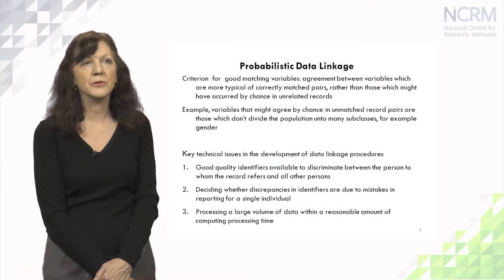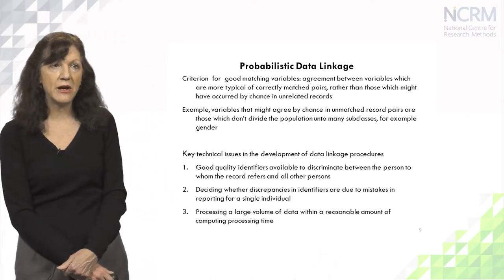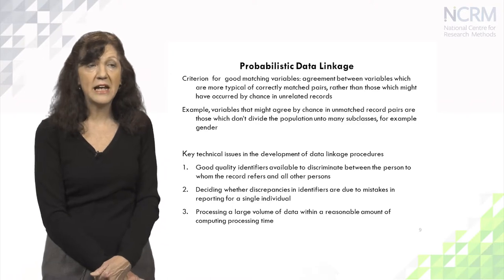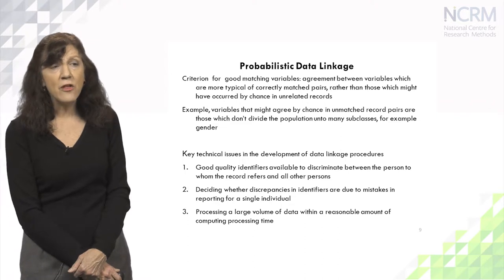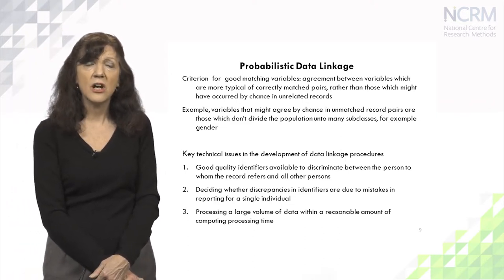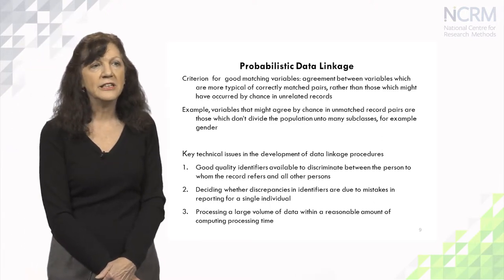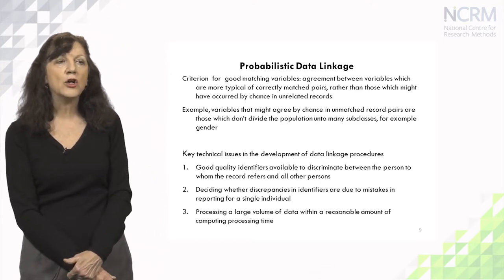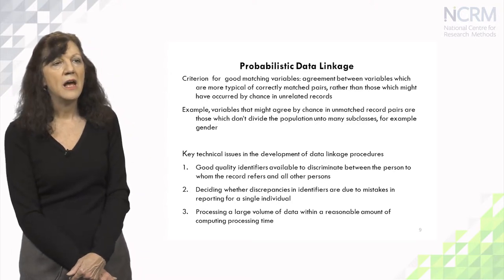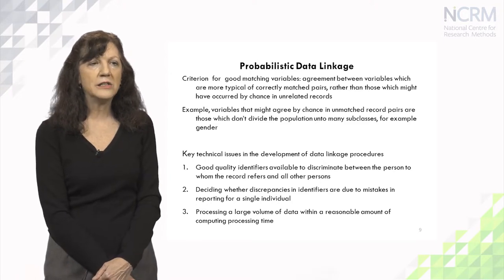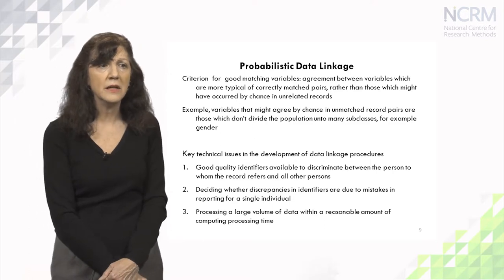The criterion for good matching variables requires that agreement between variables is more typical of correctly matched pairs rather than those which might have occurred by chance in unrelated records. For example, variables that might agree by chance in unmatched record pairs are those which don't divide the population into many subclasses — such as gender, which has a 50% chance of a correct match. The key technical issues are good quality identifiers that discriminate between individuals, handling discrepancies due to reporting mistakes, and processing a large volume of data within a reasonable computing time.